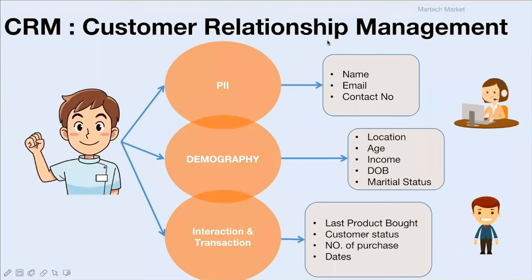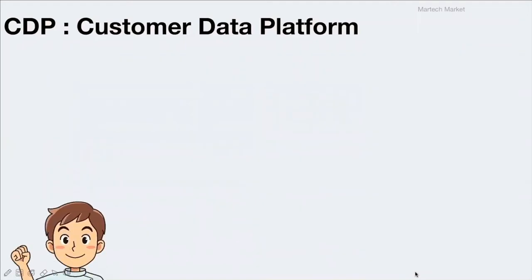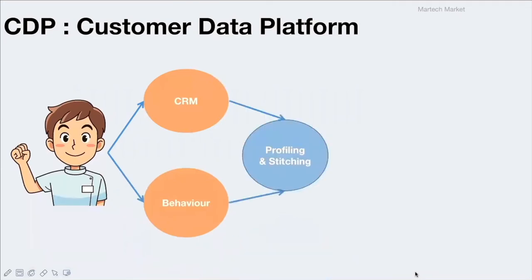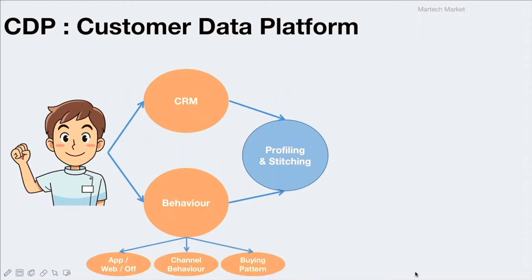That is where the CDP comes into picture. CDP or the Customer Data Platform is basically an intelligent platform that combines a customer's CRM data along with behavioral data to do customer profiling and data stitching. Behavioral data is basically the customer's app or web behavior, channel behavior, or buying pattern — for example, what kind of product or category the user views, clicks, adds to cart, or purchases from the website, app, and offline.